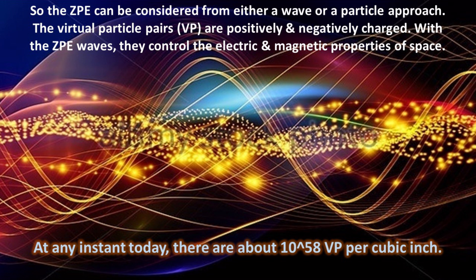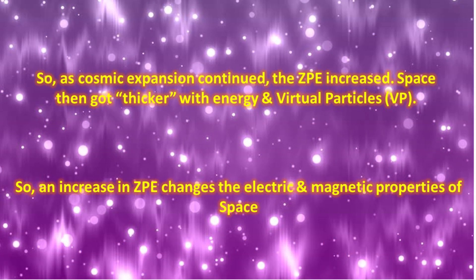In fact, there is a whole zoo of virtual particles of all types. The virtual particle pairs, Vp, are positively and negatively charged. As a result, along with the ZPE waves, they control the electric and magnetic properties of the vacuum of space. At any instant today, there are about 10 to the 58 virtual particles per cubic inch. So as cosmic expansion continued, the ZPE increased. Space then got thicker with energy and virtual particles. So an increase in ZPE changes the electric and magnetic properties of space.